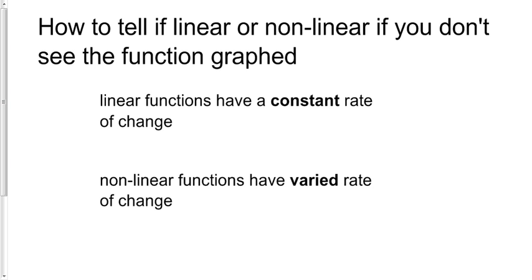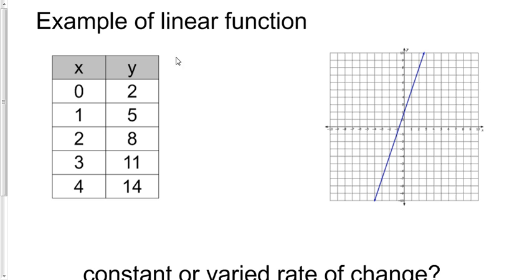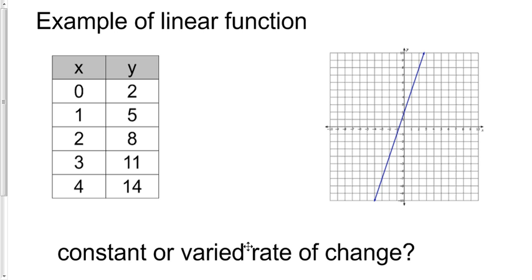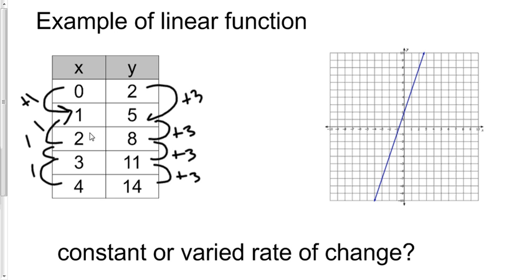So let's get busy. This example of a linear function, I've already got the table graphed right here so we can see it, we can prove that this function is a straight line. But we're going to pretend like we don't see the graph and see what it would look like. We need to find its rate of change, and we've had previous lessons on that, so let's put that skill to good use. As the x goes up by one, you'll notice that y goes up by three.